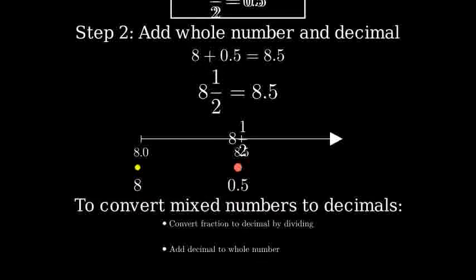And that's how we convert a mixed number to a decimal. Remember, first convert the fraction to a decimal by dividing, then add it to the whole number.